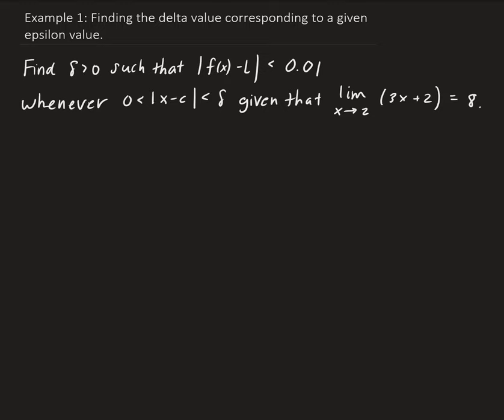What we're going to do is start by looking at the absolute value of the difference between the function and the limit. In this case, our c value is equal to 2. We have our function and our limit, and we're going to work backwards to get a value of delta.